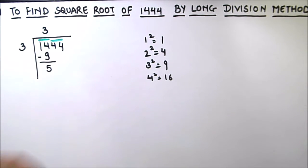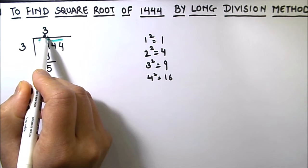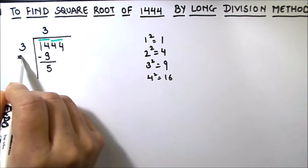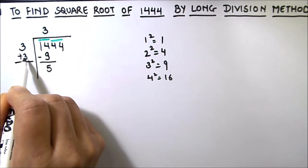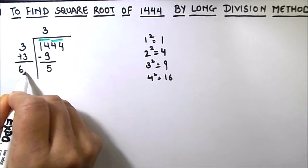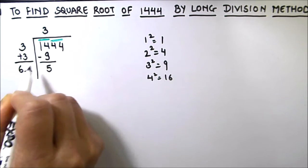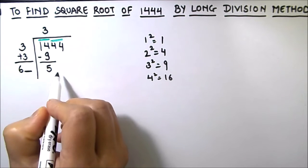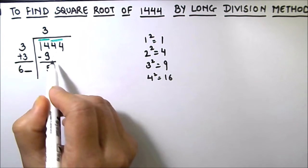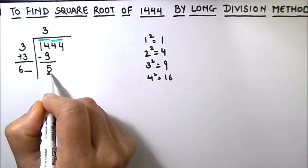Now the next step is to add the same number which is in the quotient to the divisor to get the next divisor digit. So we have 3 plus 3 is equal to 6, and we have to add one more digit here for our next divisor which we will decide after we drop down the next pair of digits. So we have 5 as our remainder here.